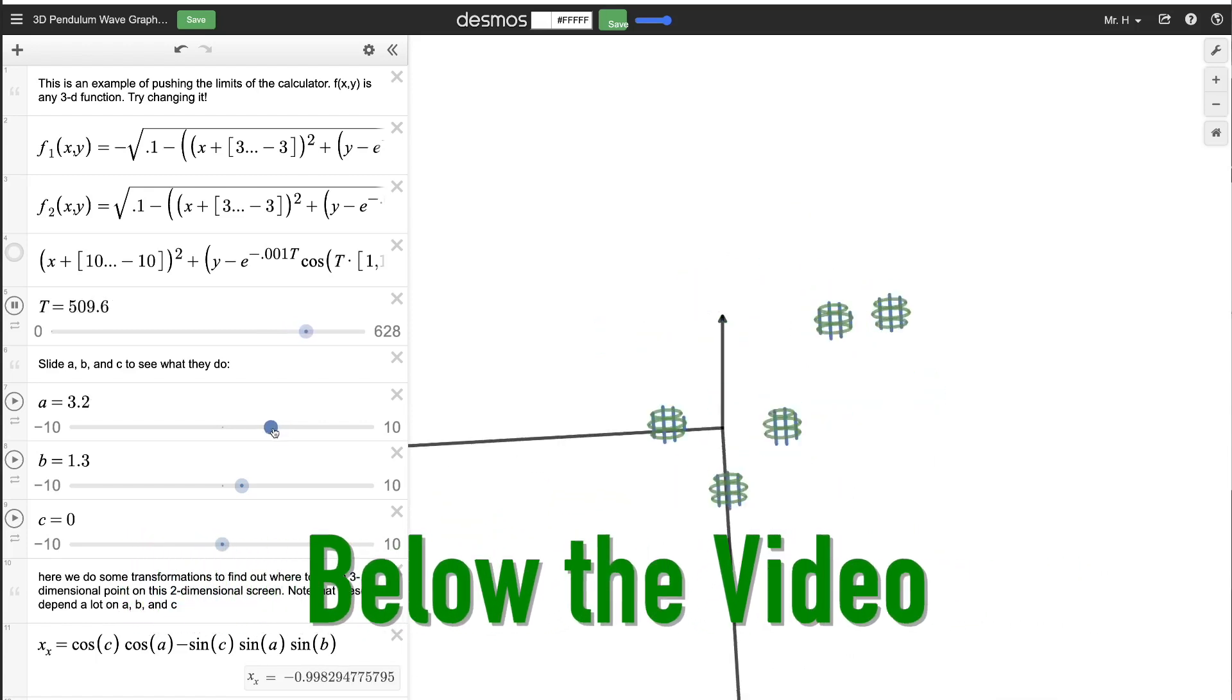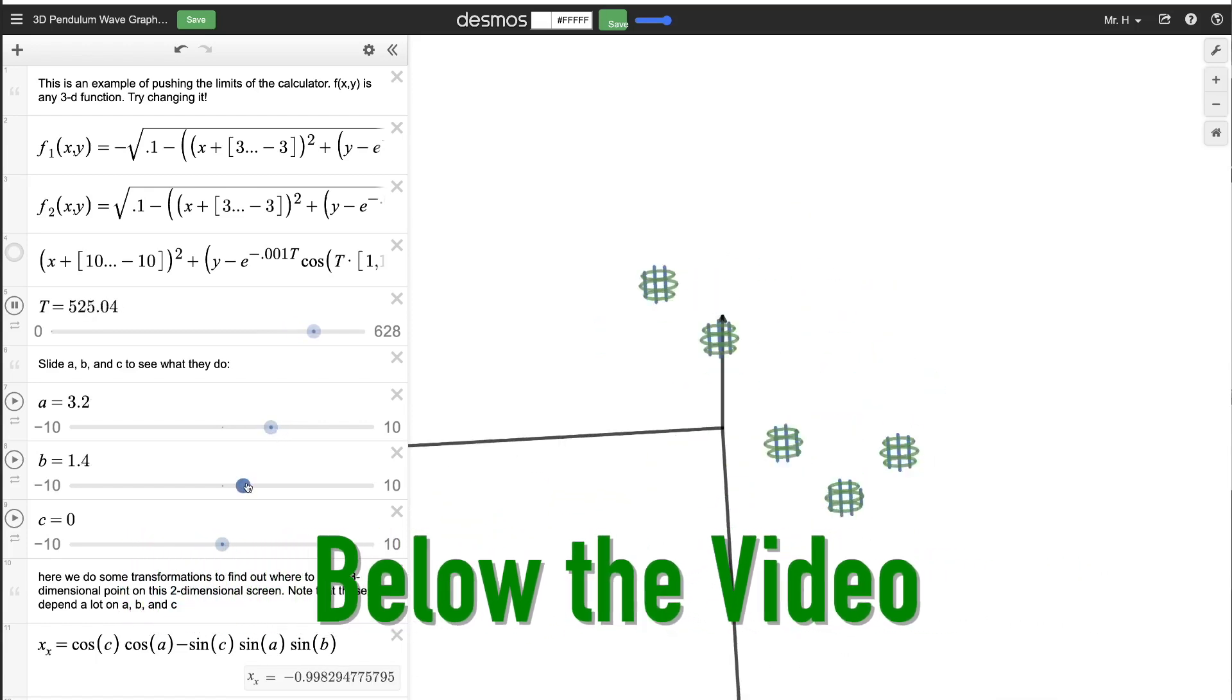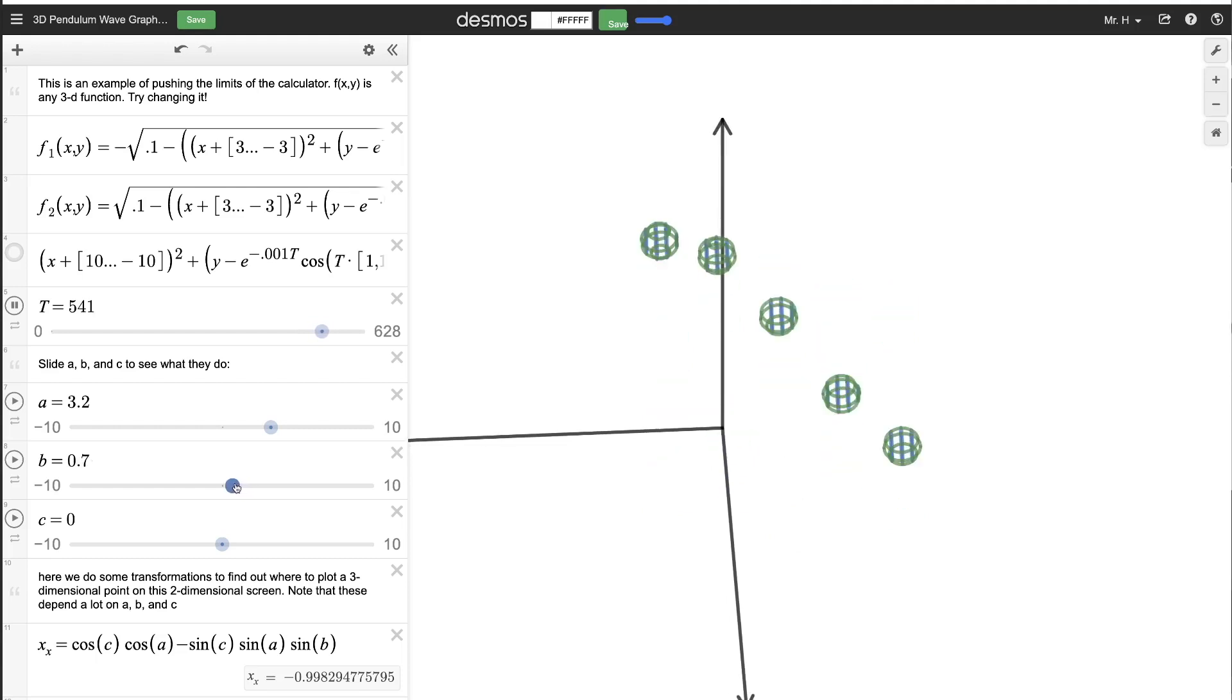So as we pan around and look at this simulation, try looking at just one single ball and notice that all it's doing is oscillating up and down, back and forth in that pattern.